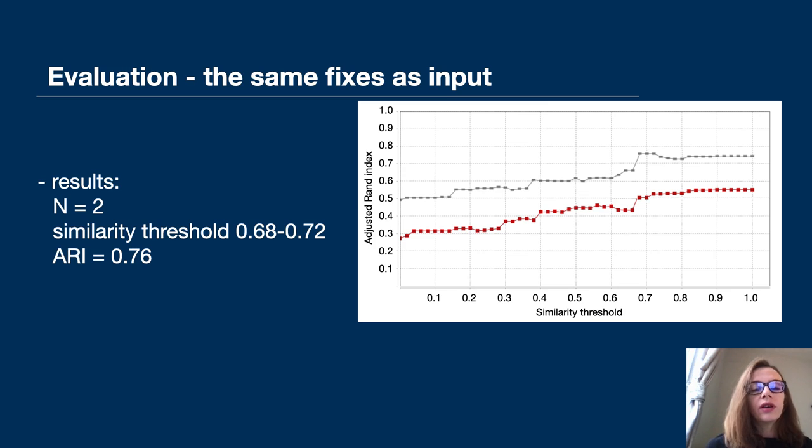Some of the disagreement between our clusters and T-bar clusters came because of the differences in the input data. In order to generate fix patterns, we use human-written fixes, while T-bar generates fixes automatically.